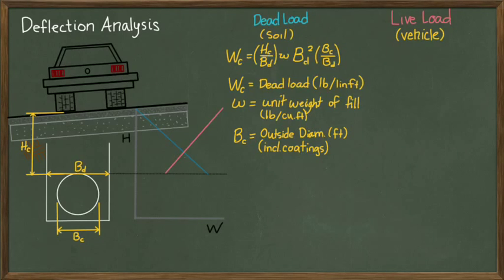If we assume the conduit is a flexible pipeline, we can cancel some terms from this equation and determine that the dead load equals the unit weight of the soil multiplied by the height of cover times the diameter of the pipeline.